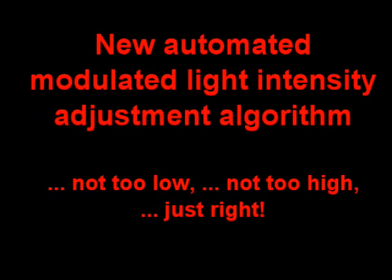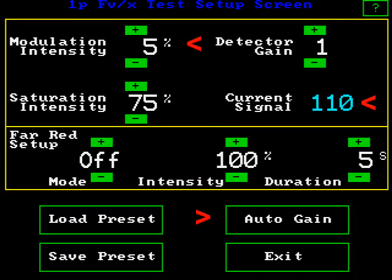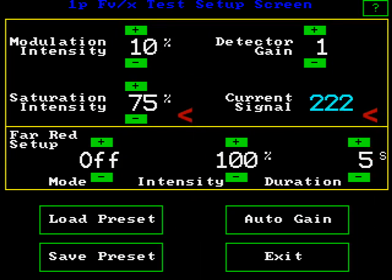To get reliable measurements, FO or minimum fluorescence must be measured reliably. To do this, the modulated light source must be set high enough to detect minimum antenna fluorescence, but not high enough to drive photosynthesis. Improperly set modulated light sources can be a source of measuring error. To overcome this, the OS-1P offers a special new routine that sets the modulated light source correctly and automatically. While old-school researchers can still set the modulated intensity manually, this new and unique option should prevent improper adjustment and provide more reliable measuring results.